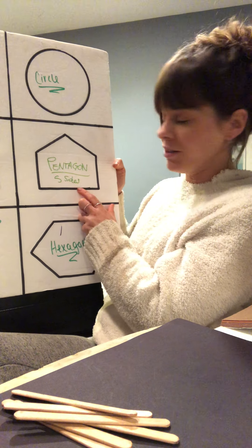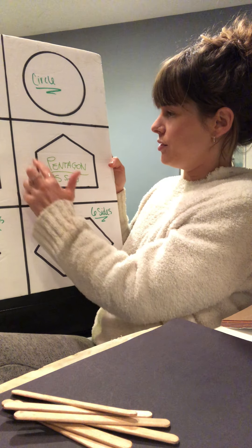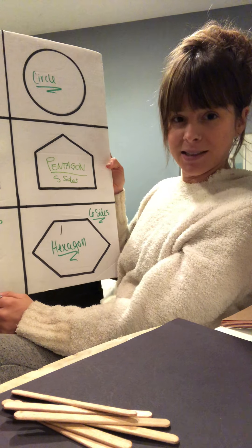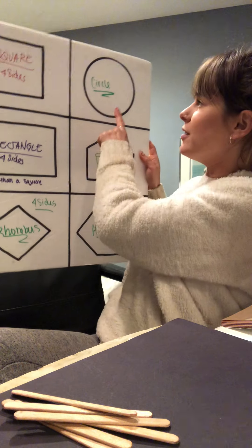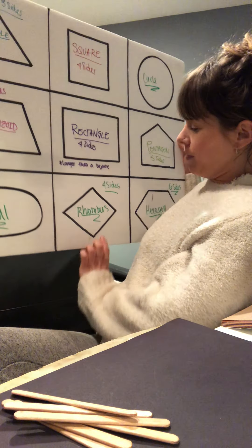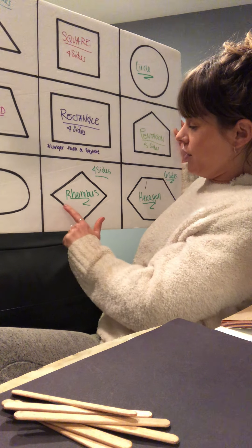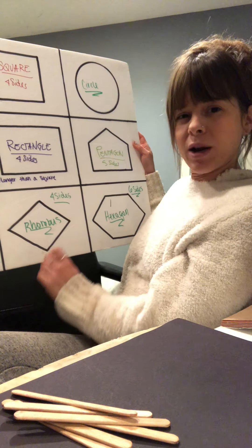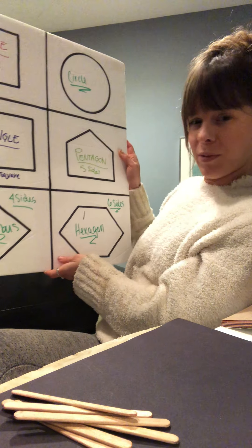And we have a pentagon here. Let's count the sides: one, two, three, four, and five sides on our pentagon. We have an oval right here. It kind of looks like our circle, but it's stretched out and bigger. Then we have our rhombus. It has one, two, three, and four sides. It's kind of like our square, but it's tilted on its side and kind of looks like a diamond shape almost.